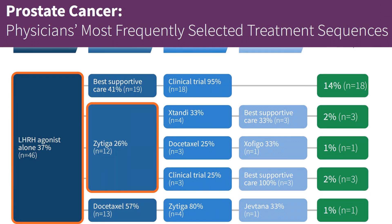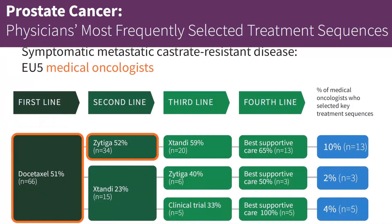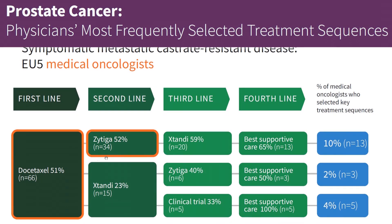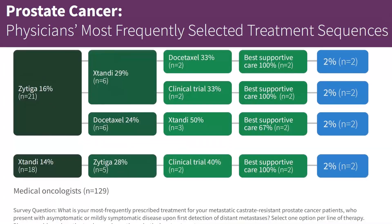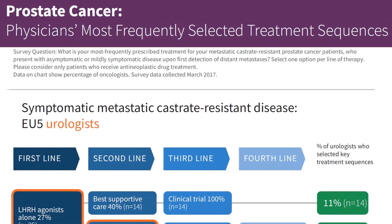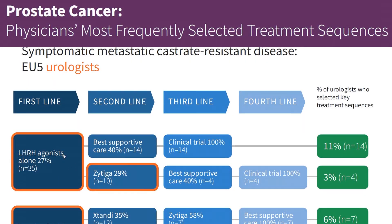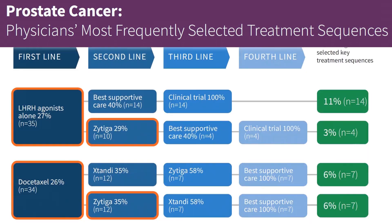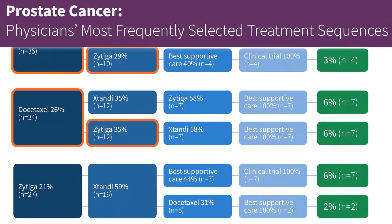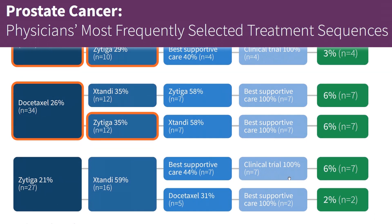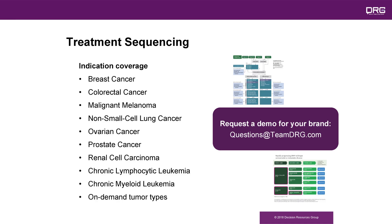We can also see similar patterns in symptomatic patients, whereby Zytiga is most commonly prescribed in the second line after docetaxel according to oncologists, and after LHRH agonists according to urologists. So using this data, the brand manager was able to understand the similarities and the differences between physician specialties and use this to plan marketing resources. For more information about our treatment sequencing solution, contact us for a demo.